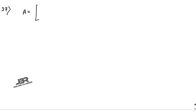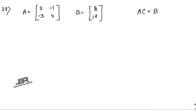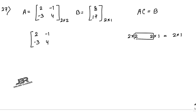Now sum number 27: A equals [2,-1; -3,4] and B equals [8; 17]. Find matrix C such that AC equals B. A is 2×2 and B is 2×1, so C must be 2×1 with elements [a; b]. Setting up: [2,-1; -3,4] multiplied by [a; b] equals [8; 17].